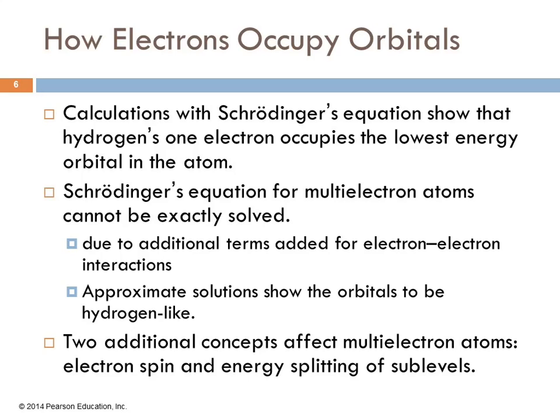Calculations with Schrodinger's equation show that hydrogen's one electron occupies the lowest energy orbital in the atom. Everything's easier for hydrogen because there's just the one electron. When you get to multi-electron atoms, there is interaction between the electrons. And so you can't solve Schrodinger's equation exactly.